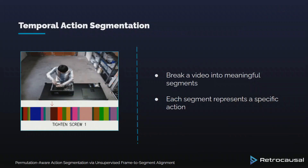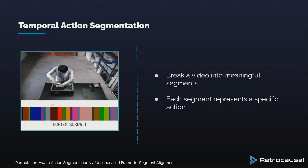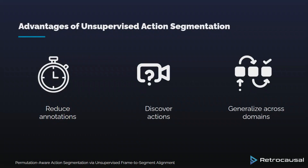Temporal Action Segmentation is a technique used to automatically identify and categorize different actions in videos over time. It helps computers understand and analyze videos by dividing them into meaningful segments, making it easier to recognize and interpret specific actions happening within the footage. We propose an automatic approach that tackles the challenge of understanding and extracting meaningful actions and their structure from videos without relying on pre-existing annotations and labeled data. Unsupervised action segmentation eliminates the need for manual annotations while leveraging inherent patterns and visual cues, enabling the model to be adaptable across video sources and settings.